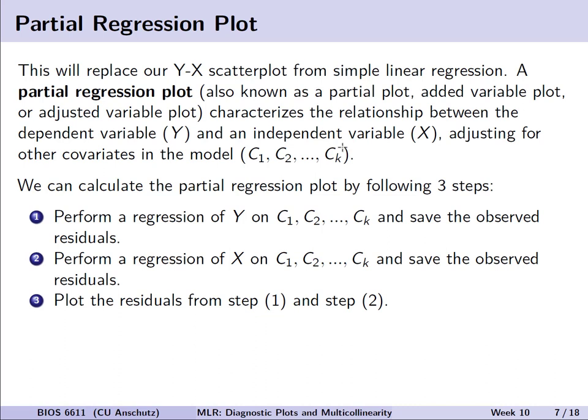Let's start with what we call a partial regression plot — also known as a partial plot, an added variable plot, or an adjusted variable plot. It tries to characterize the relationship between the dependent variable y and an independent variable x, adjusting for all of the other covariates in the model, which we might denote c-sub-1, c-sub-2, up to c-sub-k.